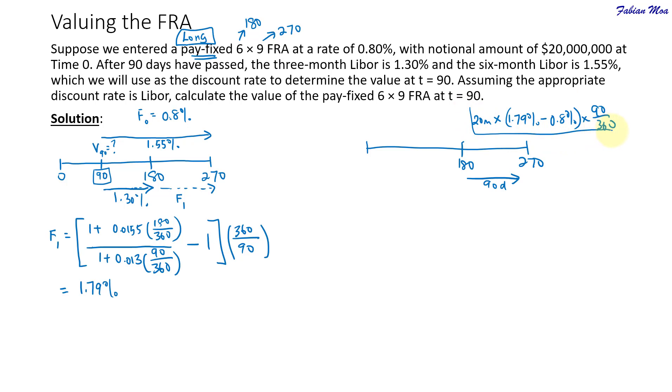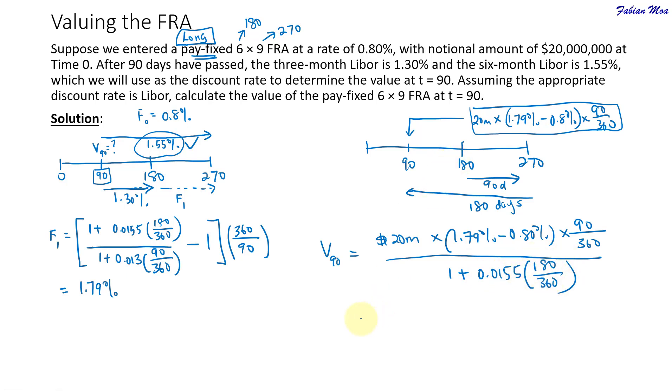This cash flow is on day 270, but we now need to find out what is the value of this FRA on day 90. I have to present value the cash flow from day 270 to day 90, so I have to discount it back for 180 days. The relevant 180-day LIBOR is 1.55%. The value on day 90 will be $20 million × (1.79% - 0.8%) × 90/360, divided by [1 + 1.55% × 180/360].